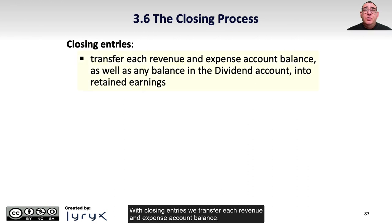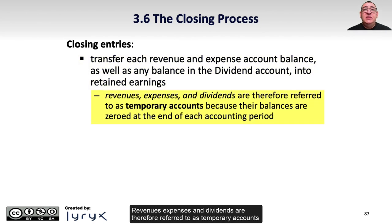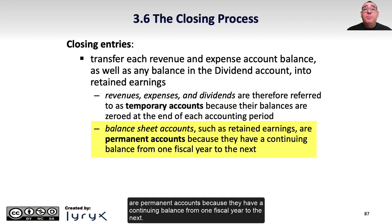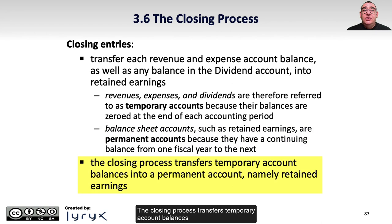With closing entries, we transfer each revenue and expense account balance, as well as any balance in the dividend account, into retained earnings. Revenues, expenses, and dividends are referred to as temporary accounts because their balances are zeroed out at the end of each accounting period. Balance sheet accounts such as retained earnings are permanent accounts because they have a continuing balance from one fiscal year to the next. The closing process transfers temporary account balances into a permanent account, which is retained earnings.